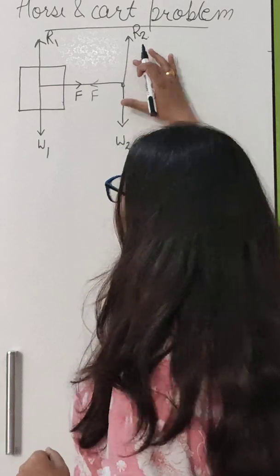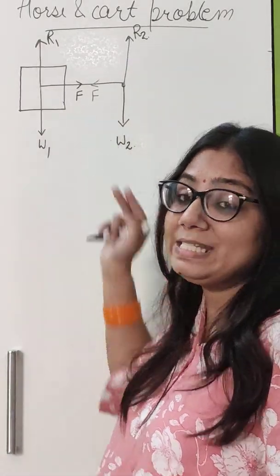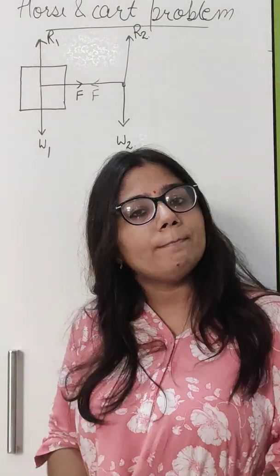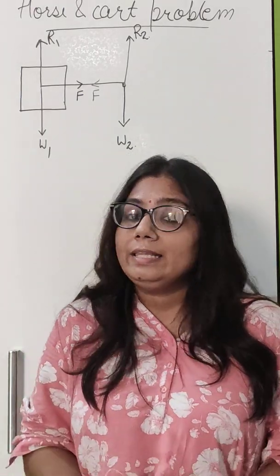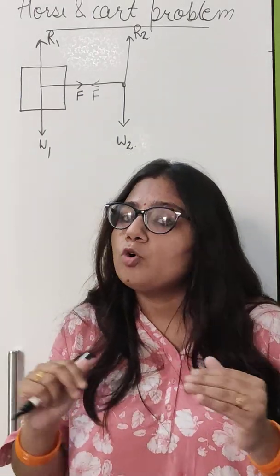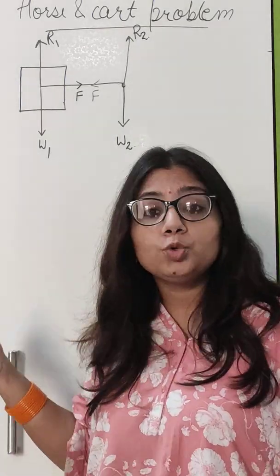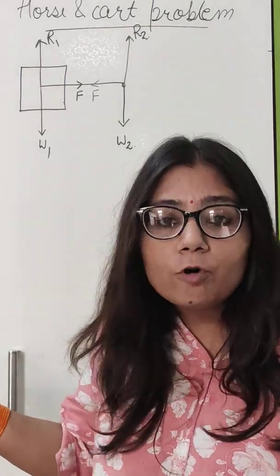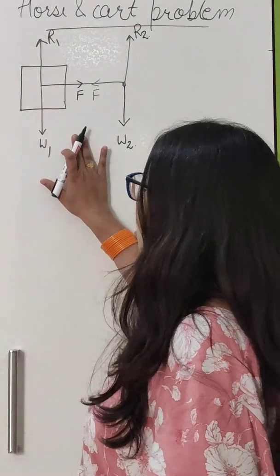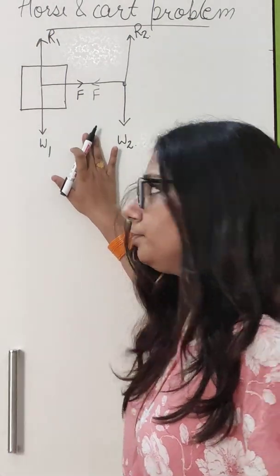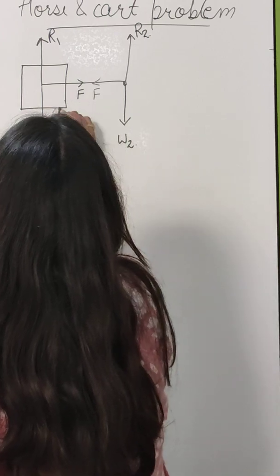These two forces are equal and opposite, and these two forces are also equal and opposite. This means all these forces are balanced. And for balanced forces, there is no motion. So how can we know which force is responsible for the motion of the horse and cart?